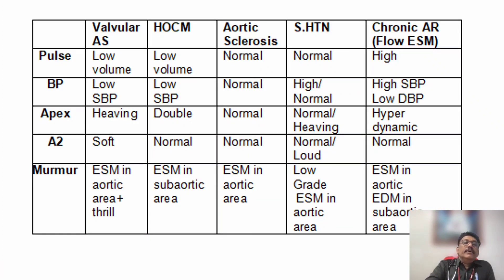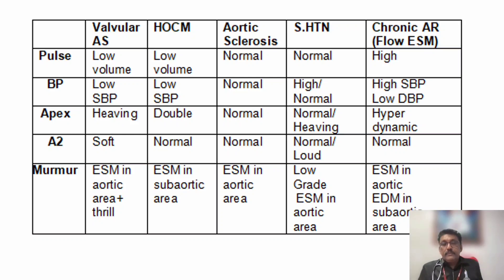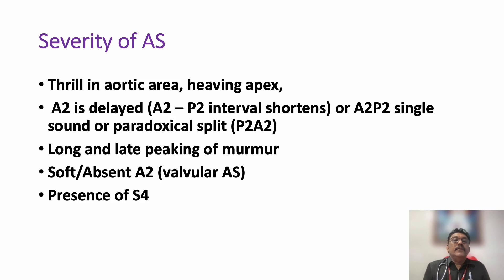Valvular aortic stenosis: low volume pulse, low systolic BP, heaving apical impulse, soft A2, ejection systolic murmur with thrill in the aortic area — very classical. Aortic sclerosis produces only an ejection systolic murmur without peripheral findings, and due to Gallavardin's phenomenon may also produce a pan-systolic murmur in the mitral area. Severity of AS is indicated by: thrill in the aortic area, heaving apical impulse, delayed A2 with paradoxical split, long and late-peaking systolic murmur, soft or absent A2, and presence of S4.